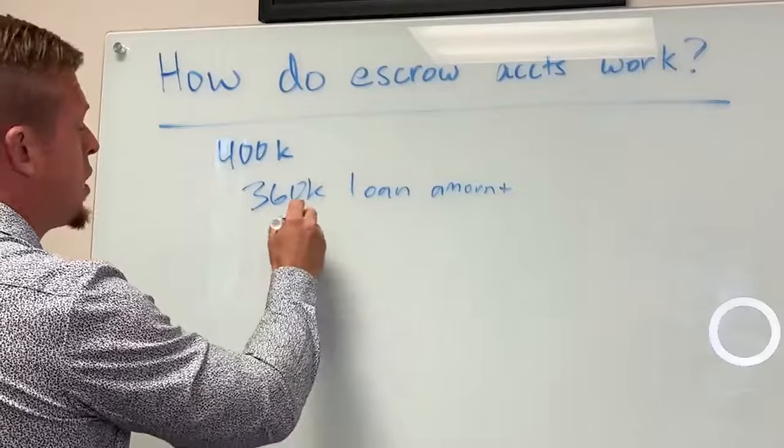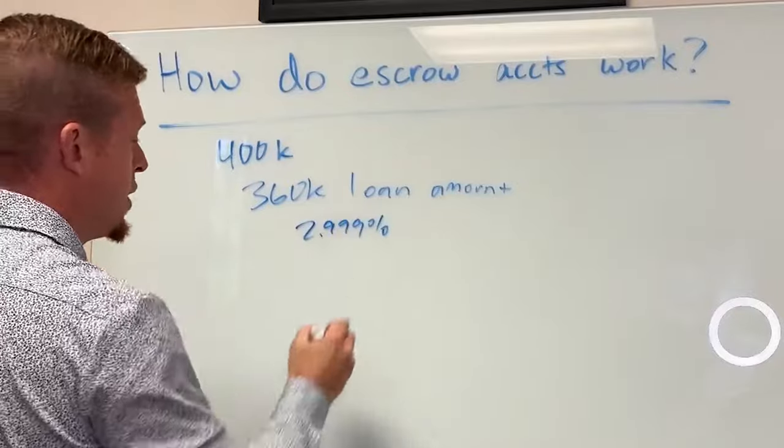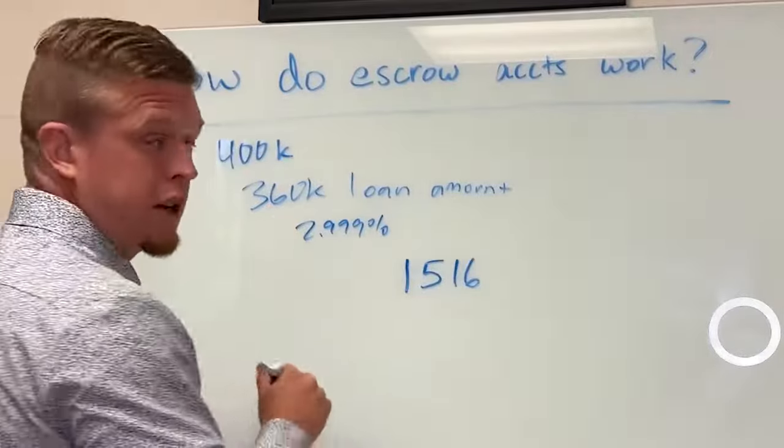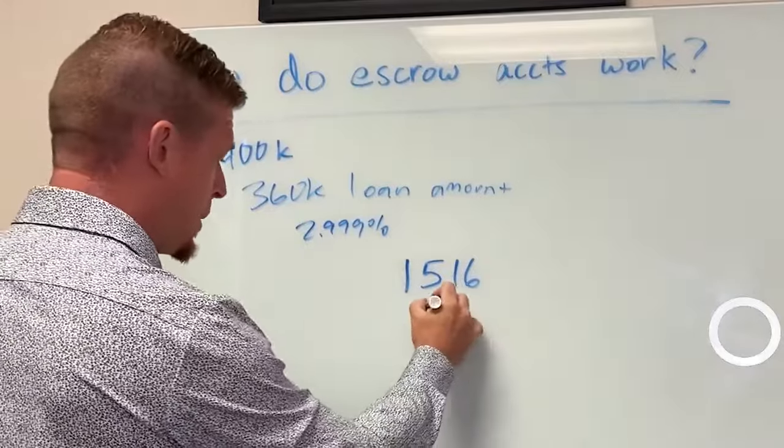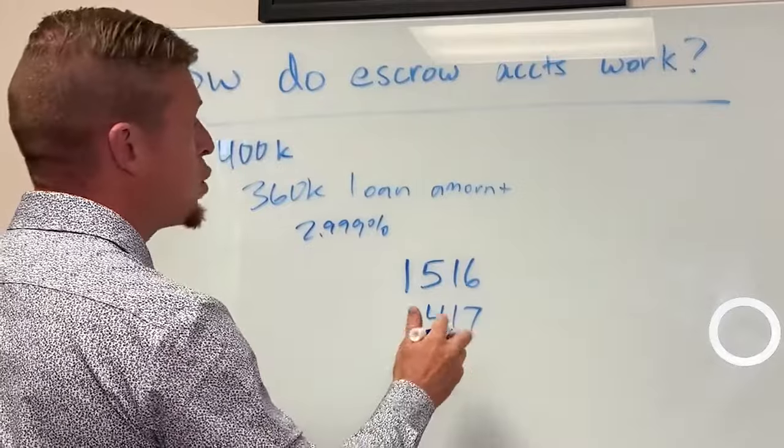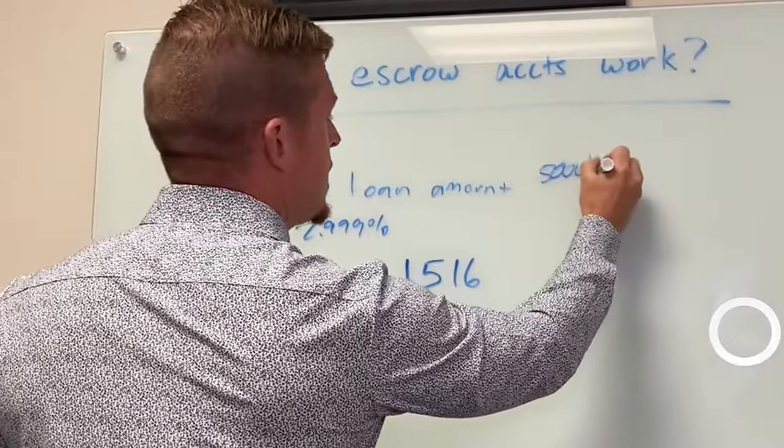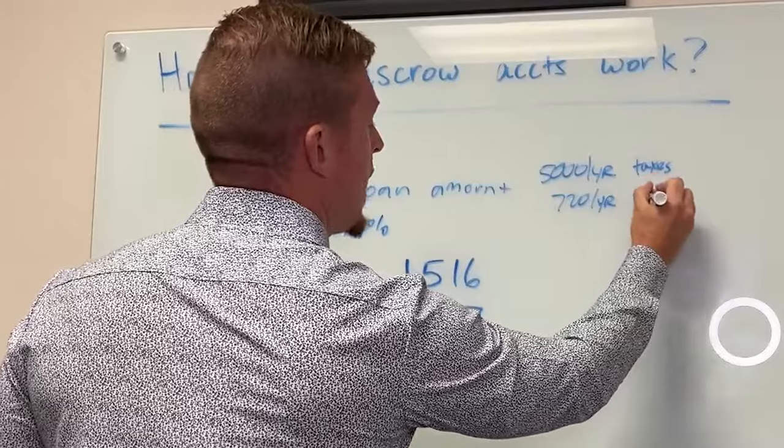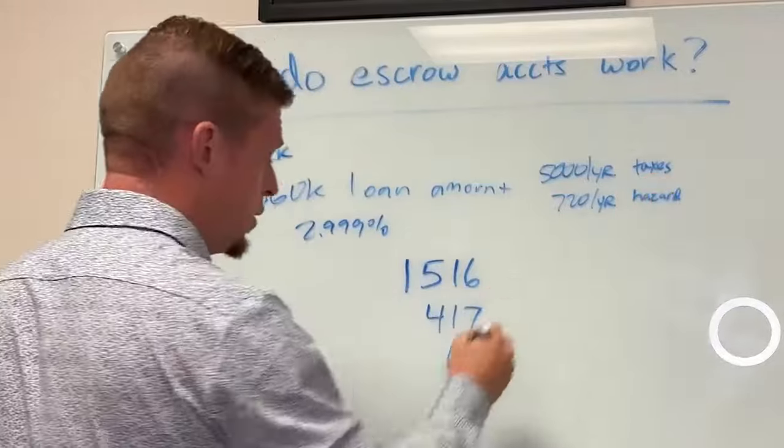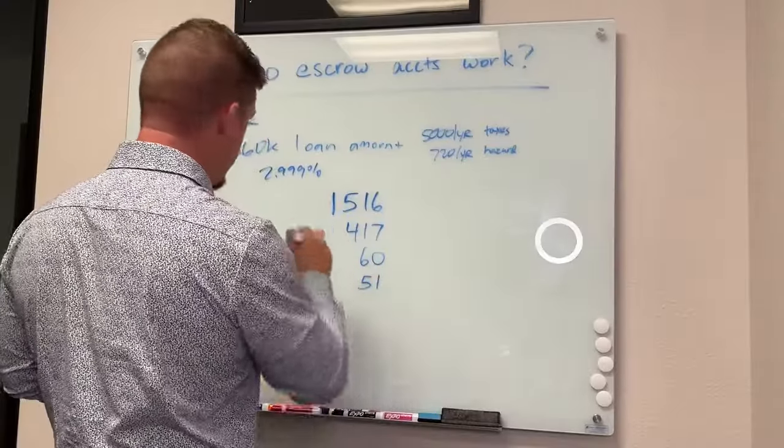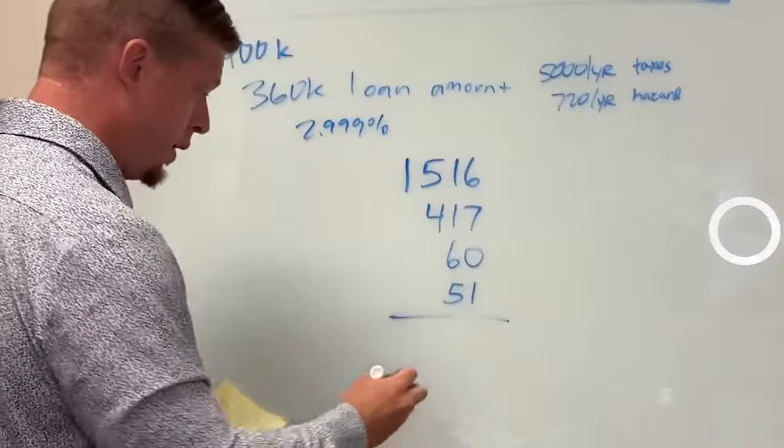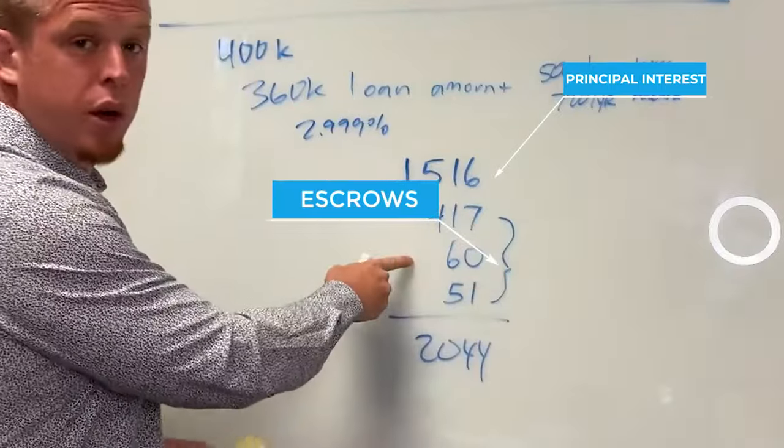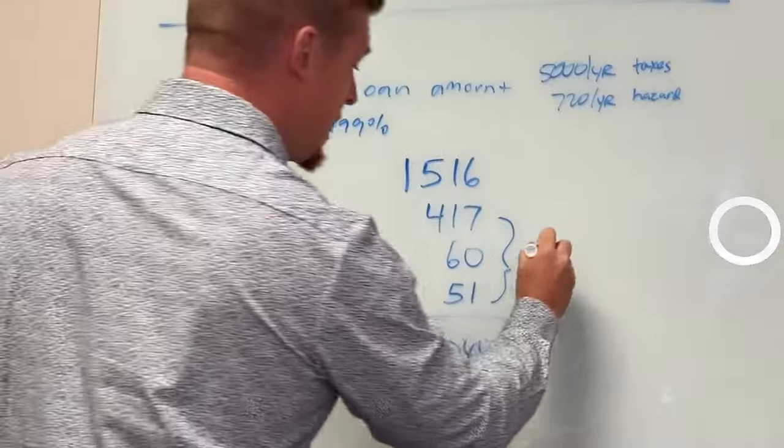Okay. So you're going to finance $360K at 2.99% on a 30 year loan. That is going to make your principal interest payment $1,516 a month. You've got $5,000 a year property taxes on this property that works out to $417 a month. You've got $720, I'll put that up here, $5,000 a year taxes, $720 a year hazard, which is homeowner's insurance. So that's $60 a month in hazard insurance. And you've got good credit. Your mortgage insurance on this loan is $51 a month. All together, this is $2,044.